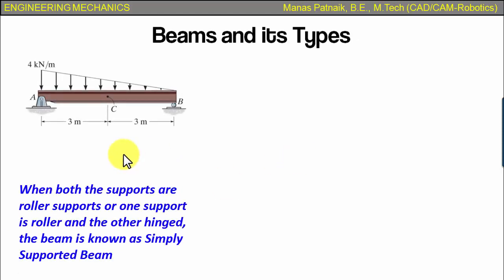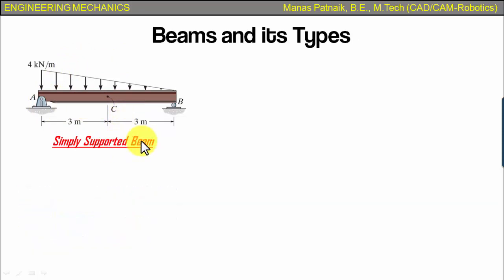If you watch carefully, now when both these supports of the beam are roller supports, or one support is roller and the other hinged, the beam is known as a simply supported beam.